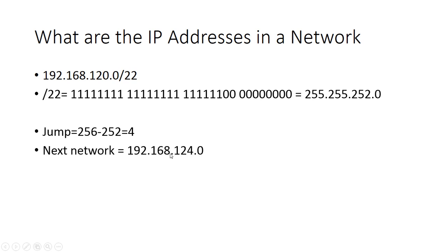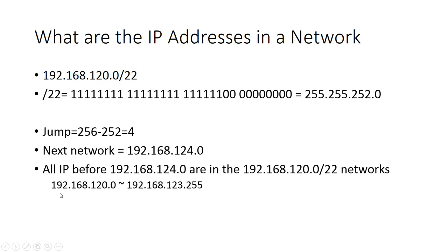So all IP addresses before this next network address are in our given network. The IP address range in our given network is 192.168.120.0 and it goes up to 192.168.123.255. The very next IP address after 123.255 is 124.0, which is the next network. So all IP addresses before the next network are within this given network. I hope you understood — if you have any questions, please let me know.